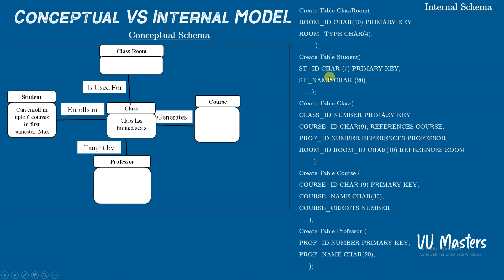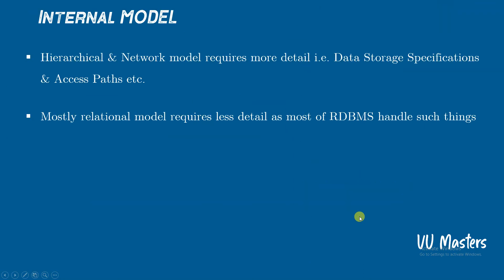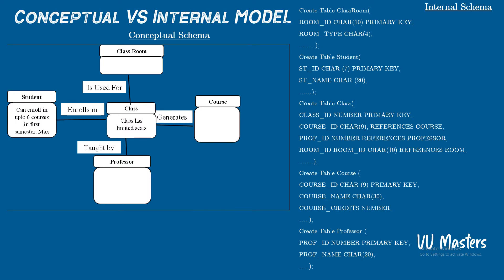We can use a SQL table for each entity — for classroom, for class, for course, and for professor. In the internal schema or internal model you have seen that we have only code, structure, database queries, and some attributes.